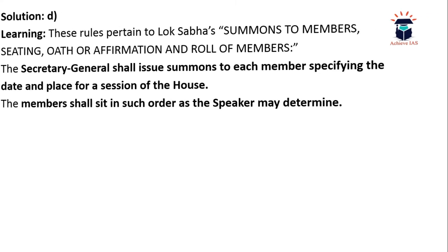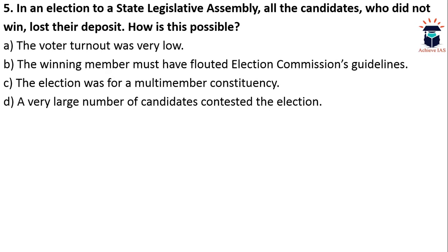The last question of the day: in an election to a legislative assembly, all the candidates who did not win lost their deposit. How is this possible? A) The voter turnout was very low, B) The winning member must have flouted election commission's guidelines, C) The election was a multi-member constituency, D) A very large number of candidates contested the election. Though this is a conceptual question, it is quite easy.